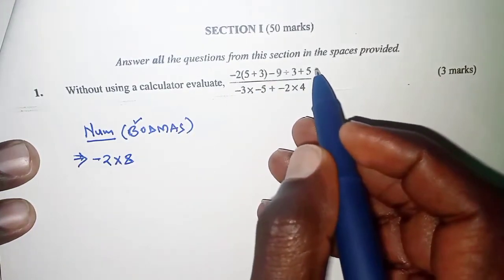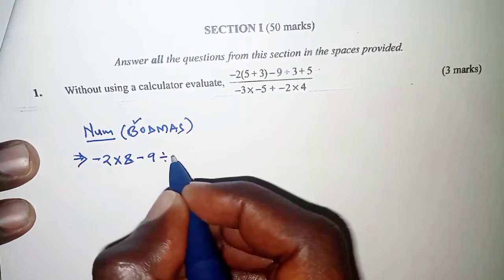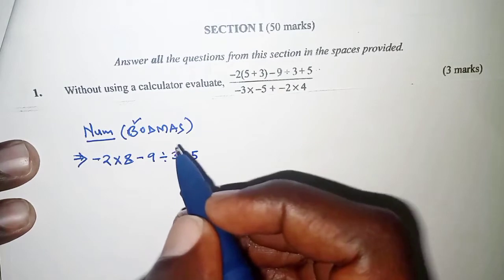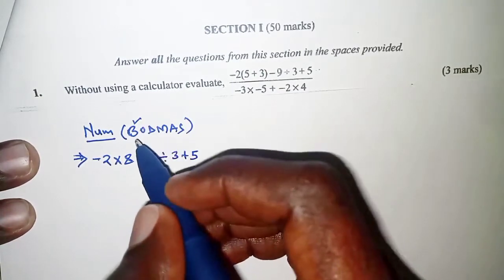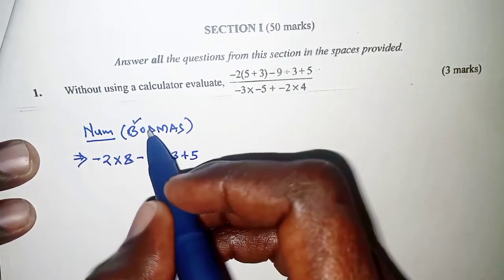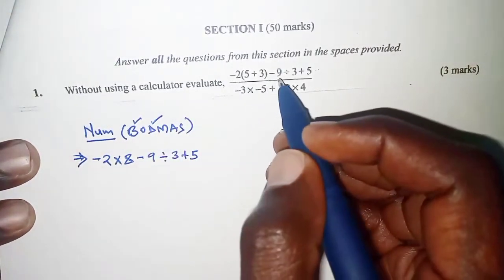Every other thing remains the way they are, negative 9, divide by 3 plus 5. Once we're done with the brackets, move to the next operation. There is no O, then division there is, so we move to division.